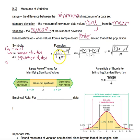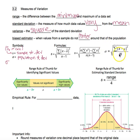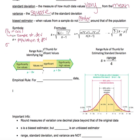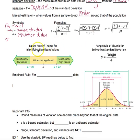There are several formulas that we use. The first two are for finding the sample standard deviation, and the last one is for finding a population standard deviation. We also have a couple of alternatives, including what is called the range rule of thumb for identifying significant values.